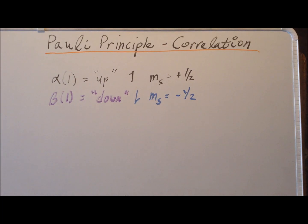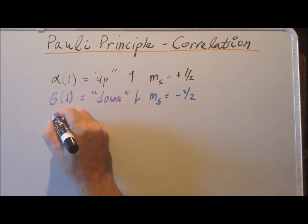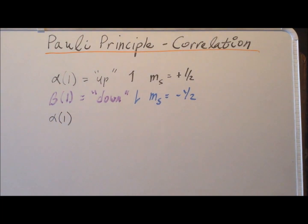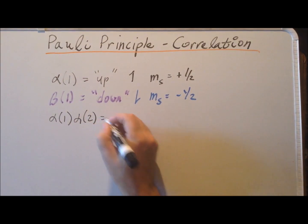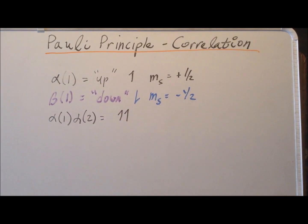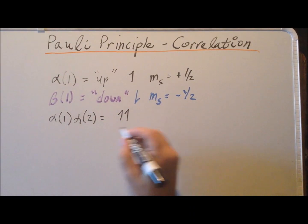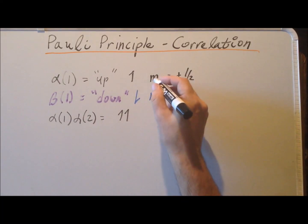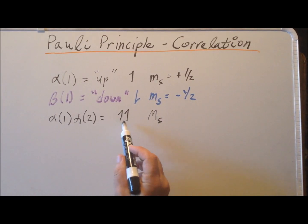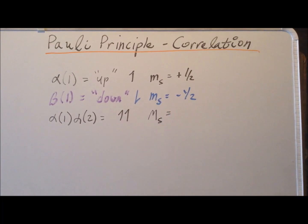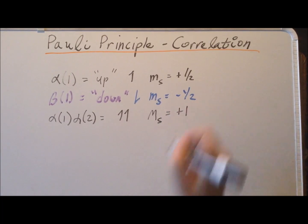Suppose that we have two electrons and we want to look at the possible combinations of electron spin. The first is where both the first and the second electron are spin up. We can represent this as two up arrows. Since we're talking about more than one electron, we use capital M_S, and counting each as plus one half, this gives us a value of plus one for capital M_S.